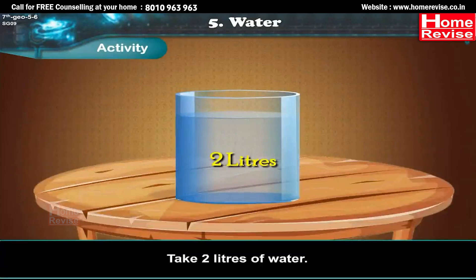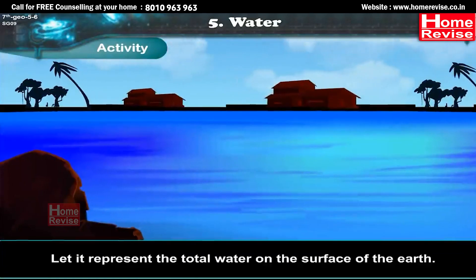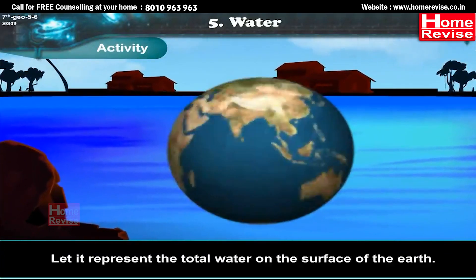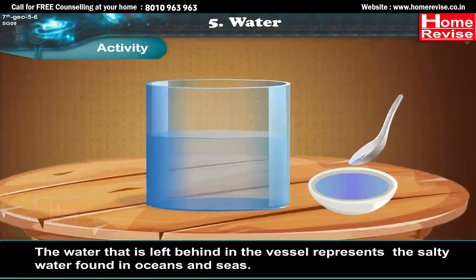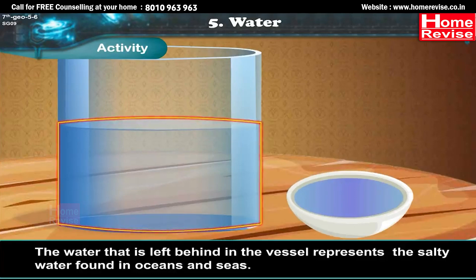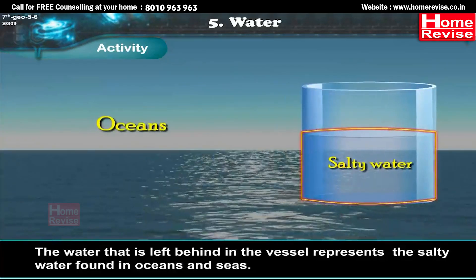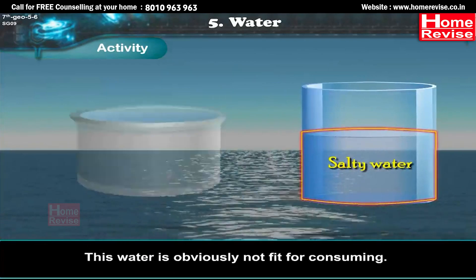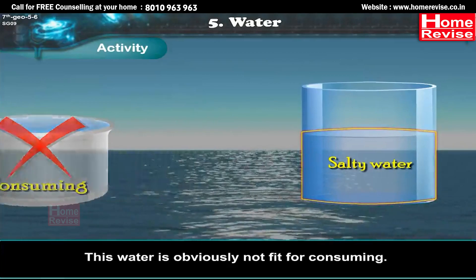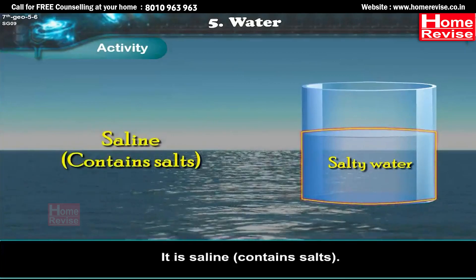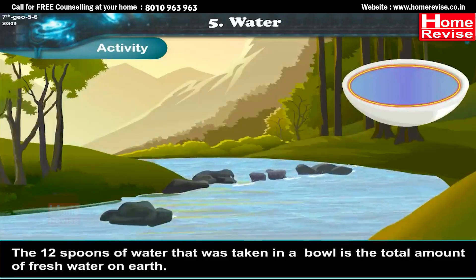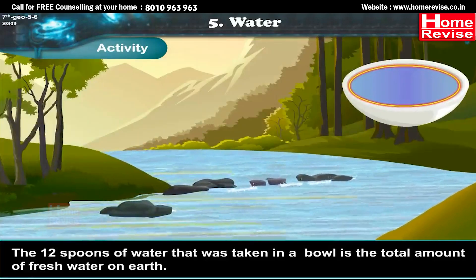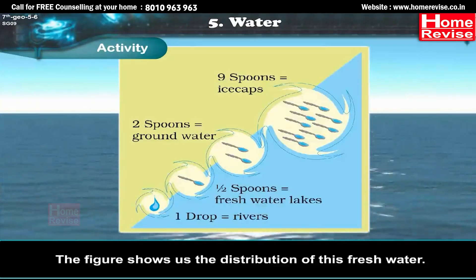Activity: Take 2 liters of water to represent the total water on the surface of the earth. Measure out 12 spoons of water from this vessel into another bowl. The water left behind in the vessel represents the salty water found in oceans and seas — it is saline and not fit for consuming. The 12 spoons of water taken into the bowl represent the total amount of fresh water on earth. The figure shows us the distribution of this fresh water.